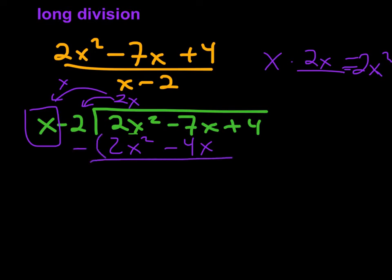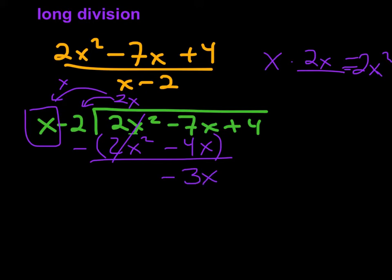Just like before, I want to subtract all of this — put it in parentheses. 2x squared minus 2x squared is 0, so those go away. Then negative 7x minus negative 4x: the minus and negative 4 turn into a plus, so this becomes negative 7x plus 4x, which gives me negative 3x. Then I bring this 4 down — it's a plus 4, that sign stays the same. Make sure you understand where all those steps came from.